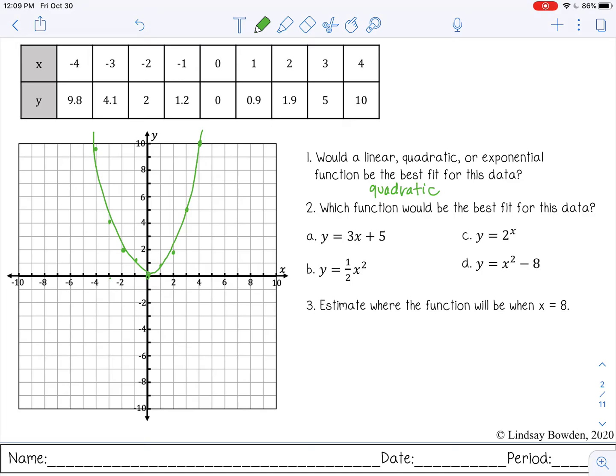Which function would be the best fit for this data? All right, so linear is out. B, that's a quadratic, so that could be it. C, that's exponential, so that's out. And then D is also a quadratic.